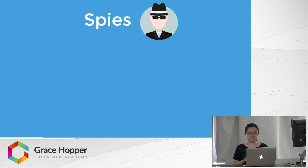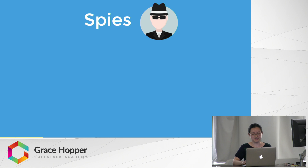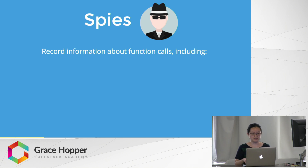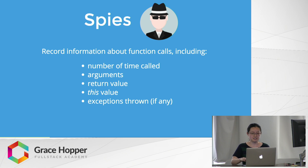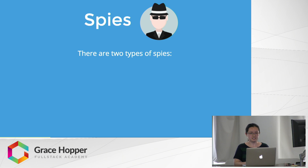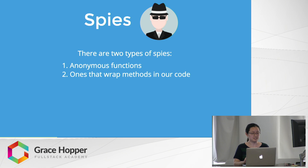The first test double is one you're probably most familiar with: spies. Spies are relatively simple but come packed with a lot of functionality. They can record information about function calls, like the number of times a function was called, what arguments they took, the return values, what the 'this' value is, or if there were any exceptions thrown. In Sinon, there are two types of spies: anonymous functions, and spies that wrap methods in our code.